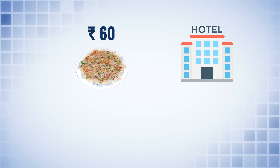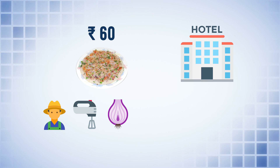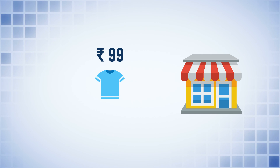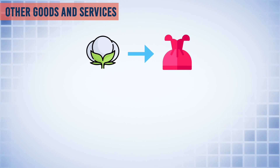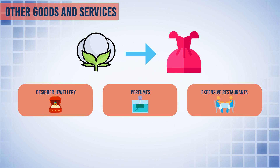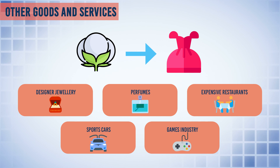For example, you buy an onion dosa from a restaurant for Rs. 60 — this is the retail price and counts as consumption. But the dosa has many ingredients at stages of the supply chain, like rice-growing farmers, batter makers, onion producers, various masala ingredient makers, and the value created by the restaurant as they put the dosa together and deliver it to the consumer. Some products have low value added, for example cheap t-shirts selling for little more than Rs. 99 — low-cost, high-volume, low-priced products. Other goods and services have lots of value added as we move from raw materials to the final product, such as designer jewelry, perfumes, meals in expensive restaurants, sports cars, and the increasingly lucrative computer games and software industry.